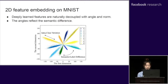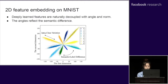Previous work by our collaborator visualizes features on MNIST by setting the output feature embedding dimension as 2. The visualization shows that deep-learned feature embeddings are naturally decoupled into angle and norm, where the angle represents semantic difference, while a higher norm stands for higher confidence. Although previous work touched the insights of the implicit correlation between human visual hardness and CNN characteristics, they don't quantitatively measure the correlation.